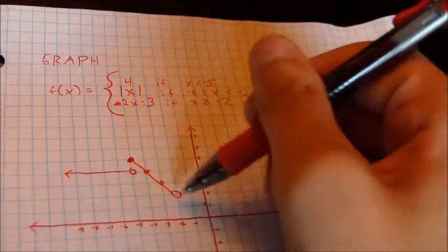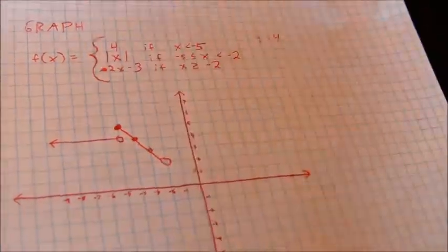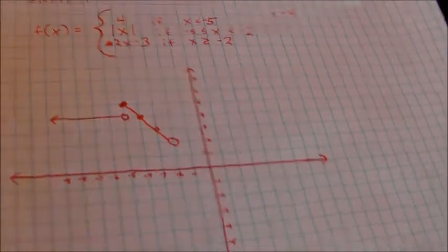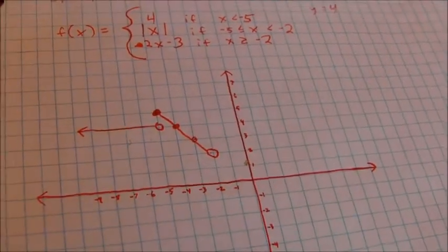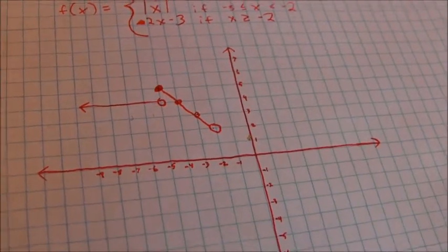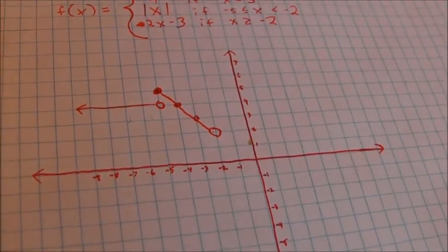And again, there are other ways to do it. You may know that the absolute value function looks like a v cutting through the origin. And you could just plot the part of it that's between x values of negative 5 and negative 2. I'm not saying that you have to plot all the points every time. But I think this is an effective way to do it if you have trouble.